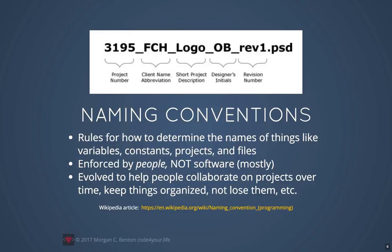This is probably a file at a graphic design company, but you can see that the file name is made up of a project number, client name, short project description, designer's initials, and a revision number. If everyone follows this naming convention, they'll be able to tell what's in a file at a glance without even opening it, keep everything sorted by project, sort by designer, and learn lots of things about the files just by the name.